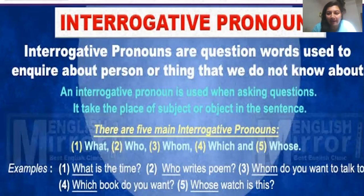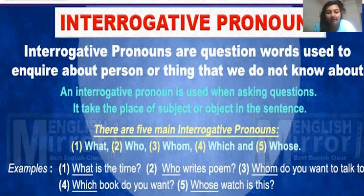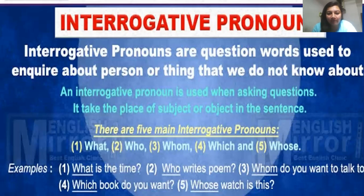You can see examples on the screen. 'What is the time?' — here 'what' is inquiring about the noun 'time'. 'Who writes poems?' — here 'who' is asking about the person. 'Whom do you want to talk to?' — here 'whom' is asking about the person you want to speak with. 'Which book do you want?' — here 'which' refers to the thing. 'Whose watch is this?' — here 'whose' refers to the person the watch belongs to.